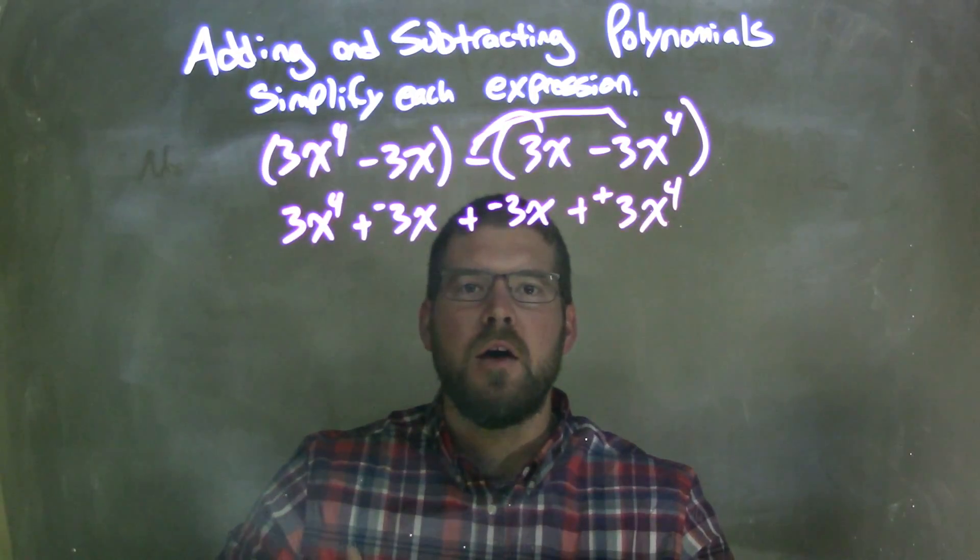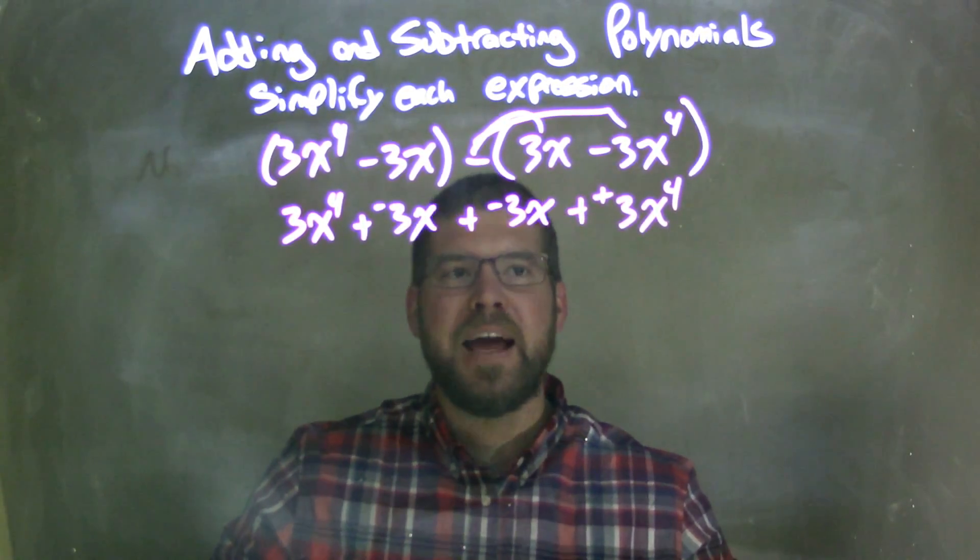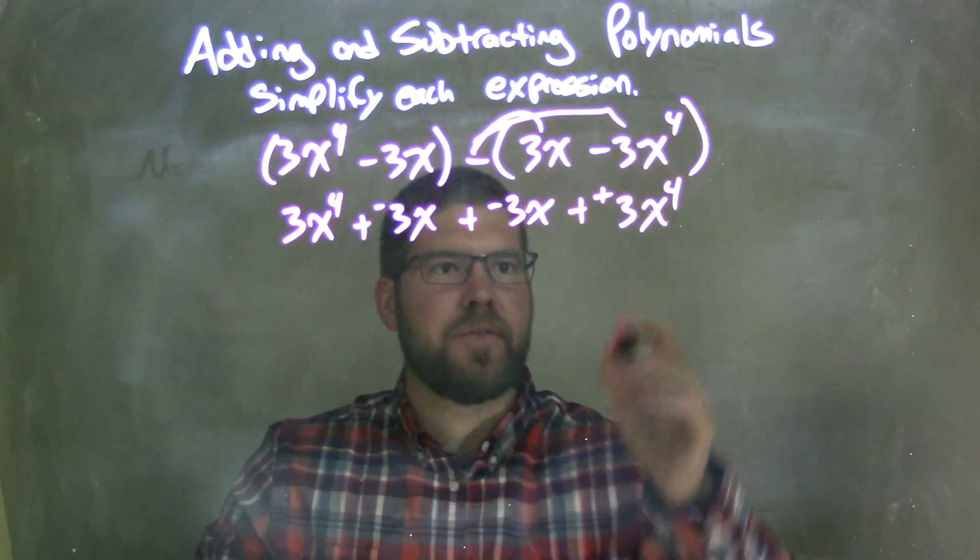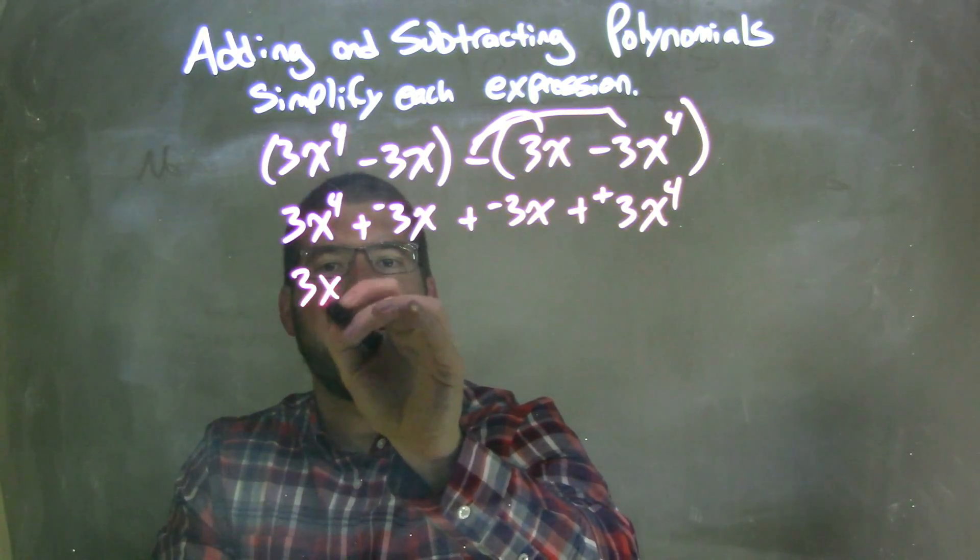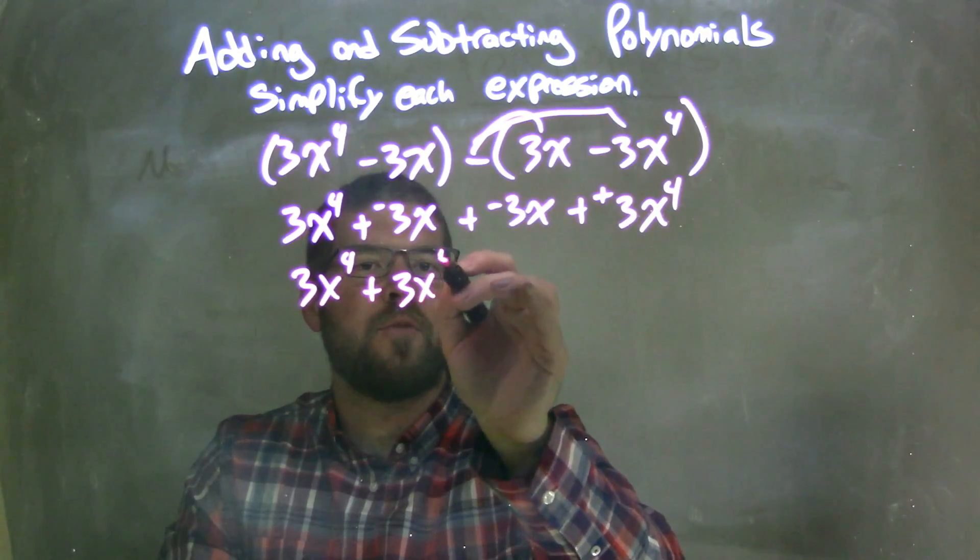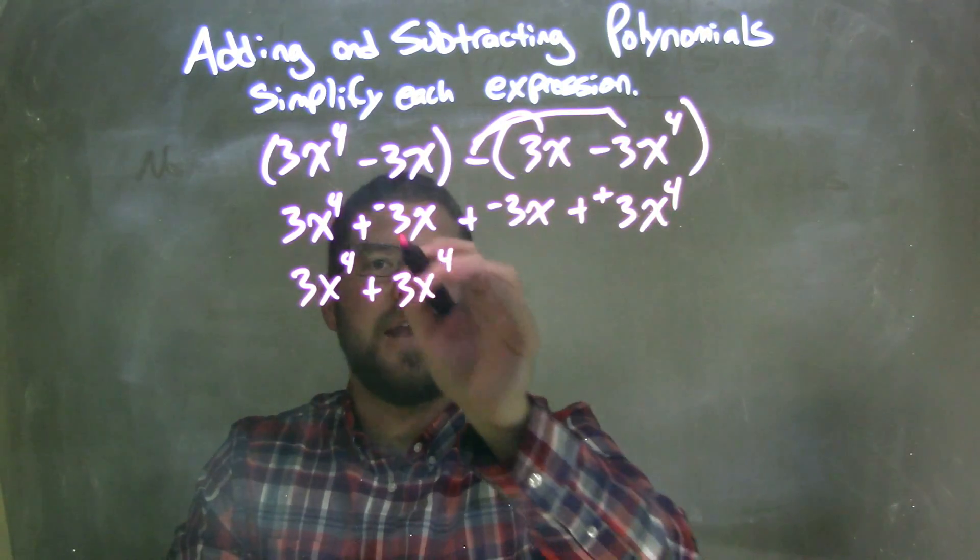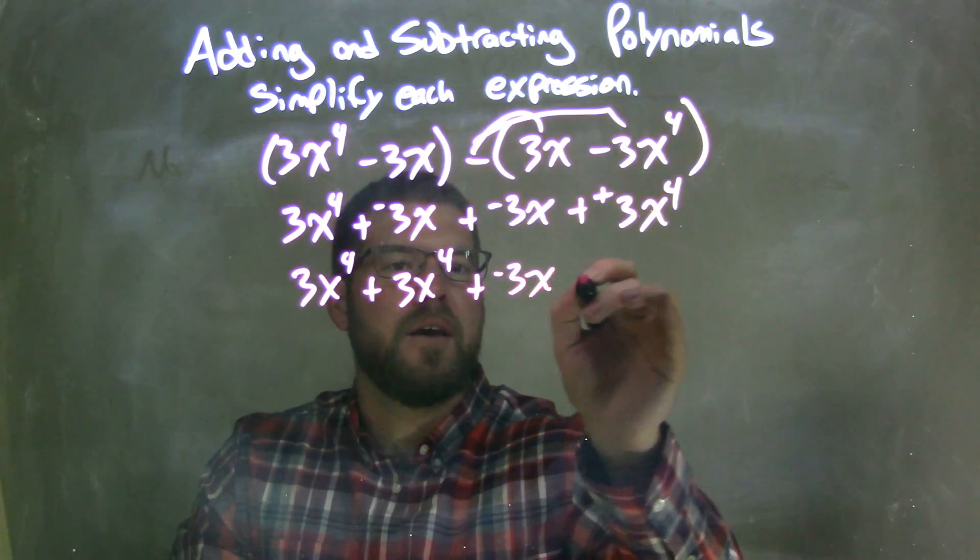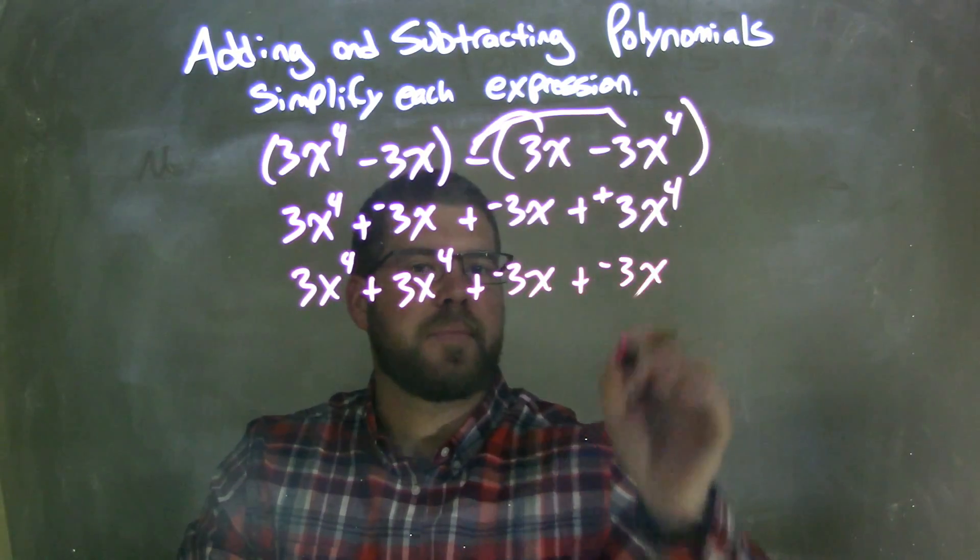Okay? So, now I'm going to rearrange putting my like terms together and my highest degree first. So, 3x to the 4th right here, highest degree to the 4th power. This one here is plus a 3x to the 4th, highest degree, right? Now, I have just the x's left. We have plus a negative 3x and plus a negative 3x. Okay?